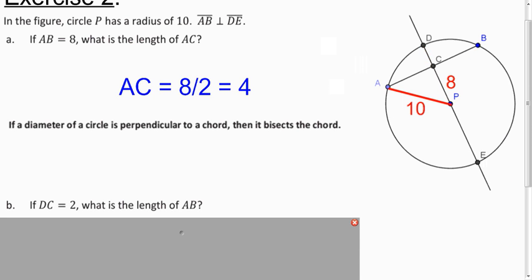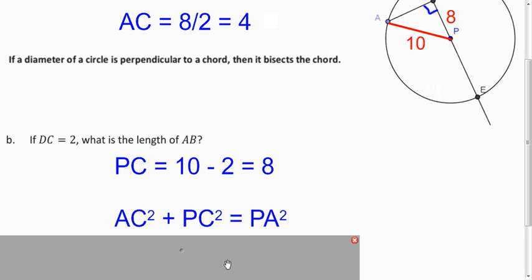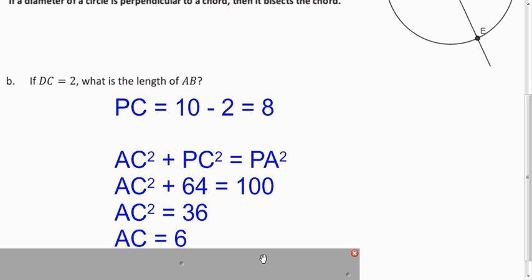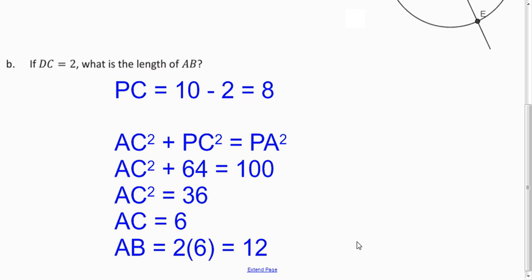So here, I cleaned up my picture a little bit. And now what can we do? Well, they told us that these are perpendicular, so we have a right angle here. So we can use Pythagorean theorem. And if you use Pythagorean theorem, we end up with AC being 6. This is actually a type of 3, 4, 5 triangle. And you just multiply 3, 4, and 5 by 2 to get 6, 8, and 10. And so that means that AB, the entire chord, is going to be 12 because it's bisected.